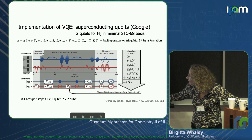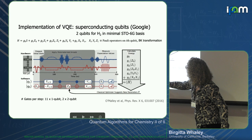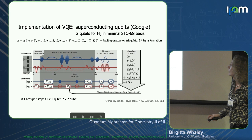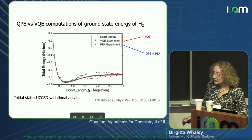They do classical optimization to iterate on the parameters. This is actually probably the only free parameter — it's a very, very simple case with just one parameter.